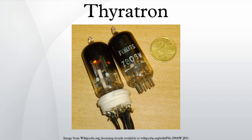Another use of the thyrotron was in relaxation oscillators. Since the plate turn-on voltage is much higher than the turn-off voltage, the tube has hysteresis, and with a capacitor across it could function as a sawtooth oscillator. The voltage on the grid controlled the breakdown voltage and thus the period of oscillation. Thyrotron relaxation oscillators were used in power inverters and oscilloscope sweep circuits.